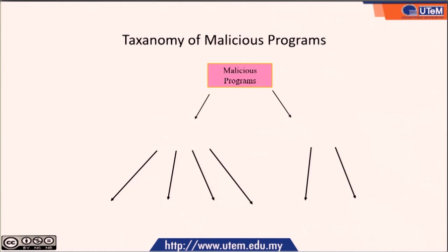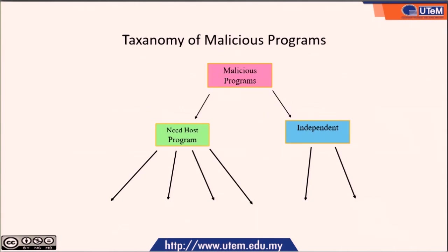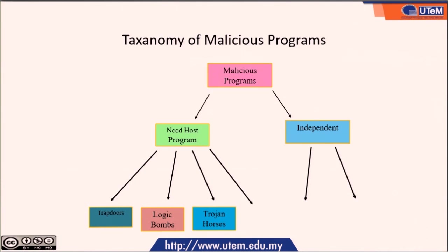Next, we go on to the taxonomy of malicious programs. Malicious programs can be divided into two kinds: the need-host program and the independent types of malicious code. The need-host program can be further divided into trapdoors, logic bombs, Trojan horses, and viruses. Whereas independent malicious programs can be divided into bacteria and worms.